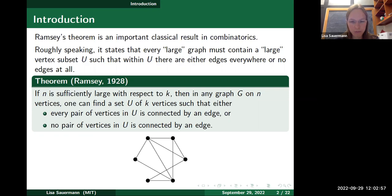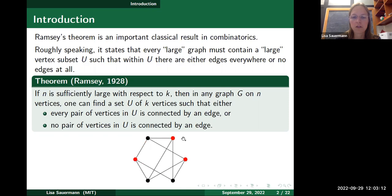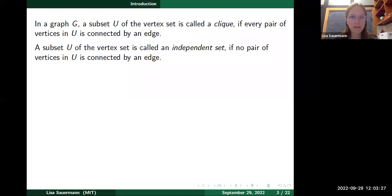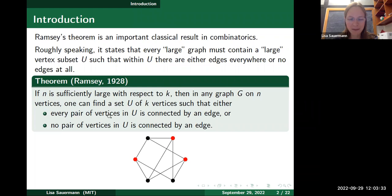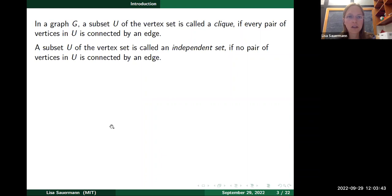For any graph on six vertices, you can always find three vertices which either are all pairwise connected by edges or have no edges between them at all. We have names for these two cases: the first case is called a clique — a subset where any two vertices are connected by an edge — and the second case is called an independent set, a subset with no edges at all.